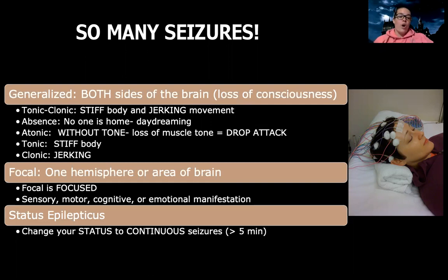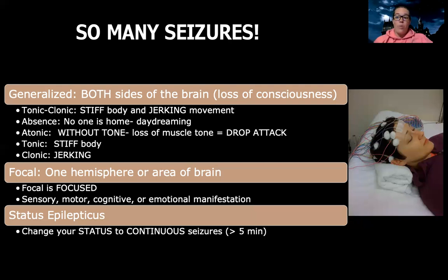There's also what's called an atonic seizure. Think atonic — 'a' is without. So without tone, a seizure is a loss of muscle tone. This is one where someone has a seizure and the way it manifests is literally they just lose complete muscle tone of their body and drop to the floor. That's what's called a drop attack seizure.